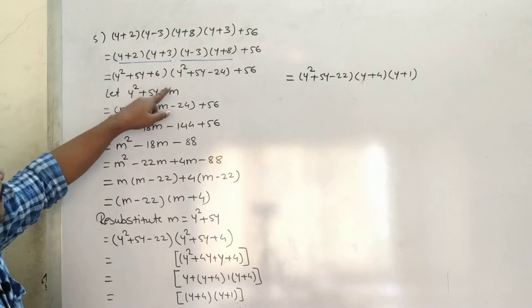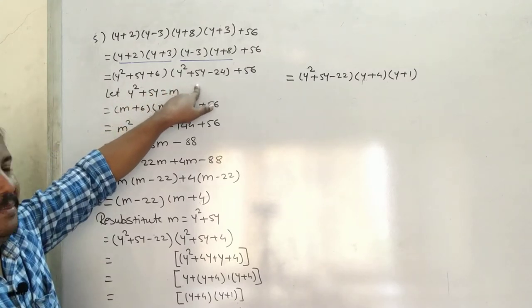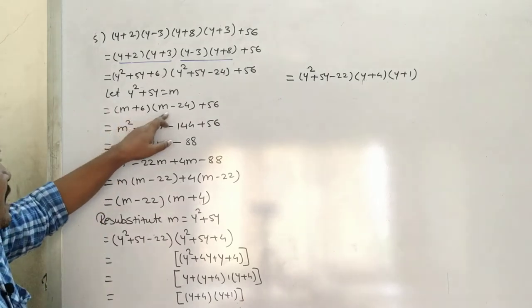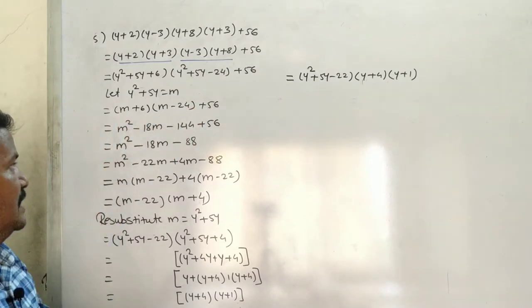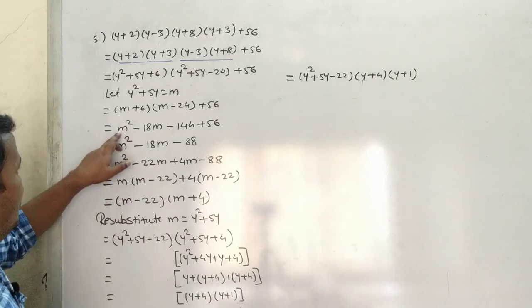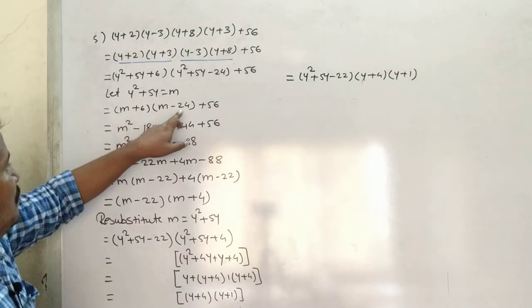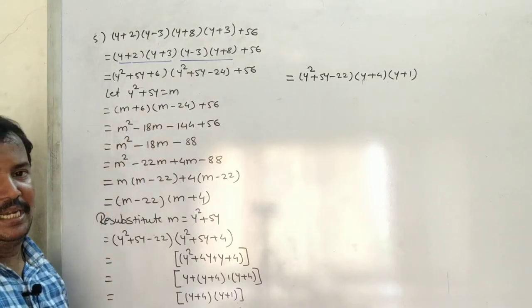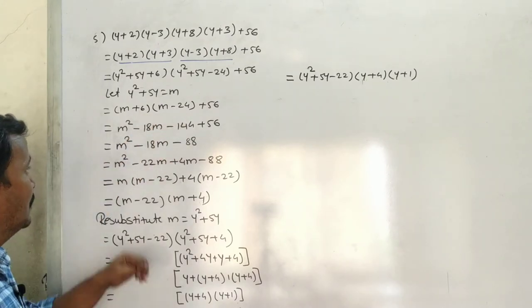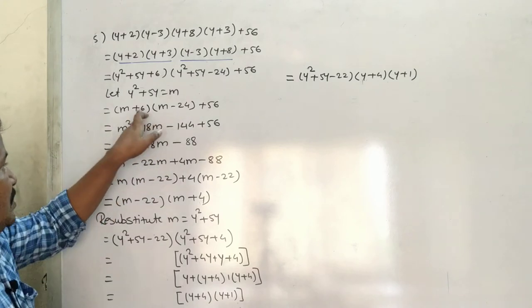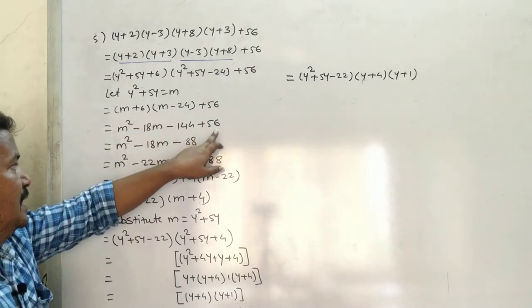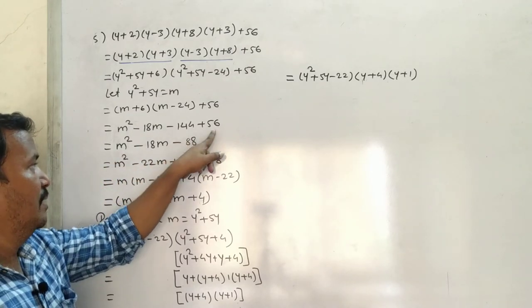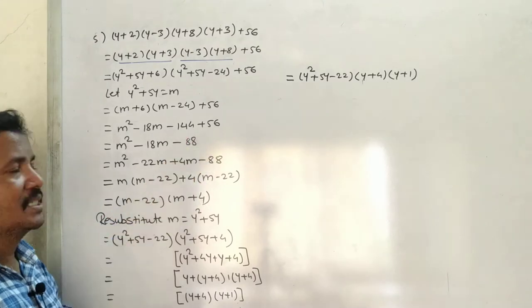So we get (m + 6)(m - 24) + 56. Expanding: m² - 24m + 6m - 144 + 56 = m² - 18m - 144 + 56 = m² - 18m - 88.